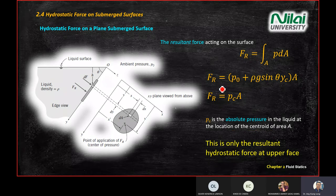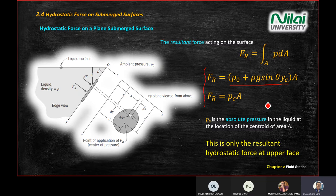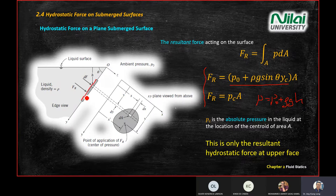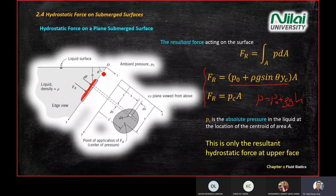The resultant force FR = PC·A, expanding to (P₀ + ρg sinθ·YC)·A. The pressure component considered is P₀ + ρgH, including atmospheric pressure. This equation only calculates the pressure on the top surface of the plate — it does not calculate the total pressure, only focusing on the area on top of the plate.